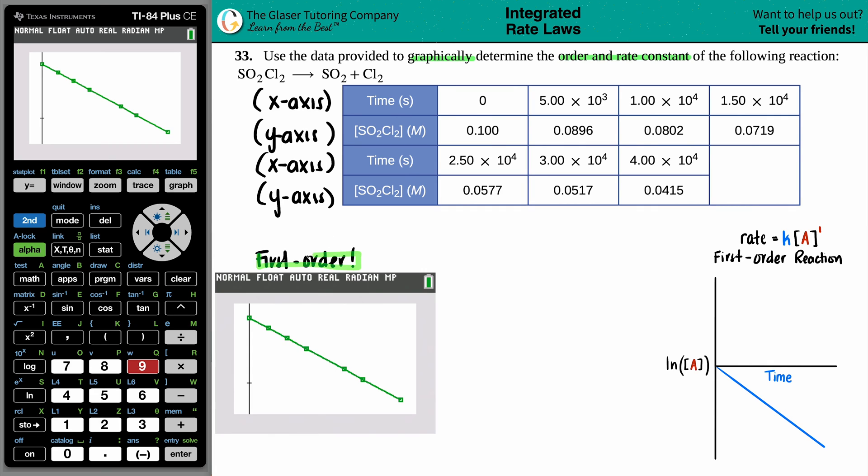If we do want to write the rate law, it would be rate equals K times the concentration of, in this case, I put A, but it's just for your reactant. The specific reactant that they gave us was SO2Cl2. Close it up. And you could put it to the first, but anything to the first is the same. So you could get rid of that.